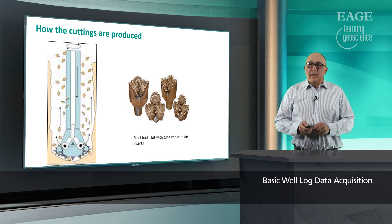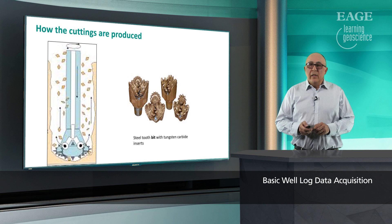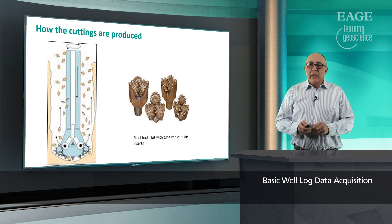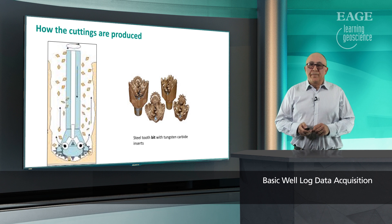These cuttings are produced when the drilling bit grinds the formation and the mud that is flowing takes the fragments all the way to the surface. At the surface, these pieces of rock are collected by the mud logger and analyzed. I show examples of the drilling bits on the right-hand side.